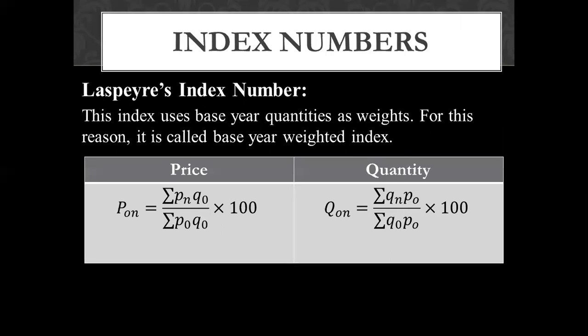First of all, let's talk about Laspeyre's index number. What is this index number? This index number uses base year quantities as weights. So Q-naught is used as the weights.